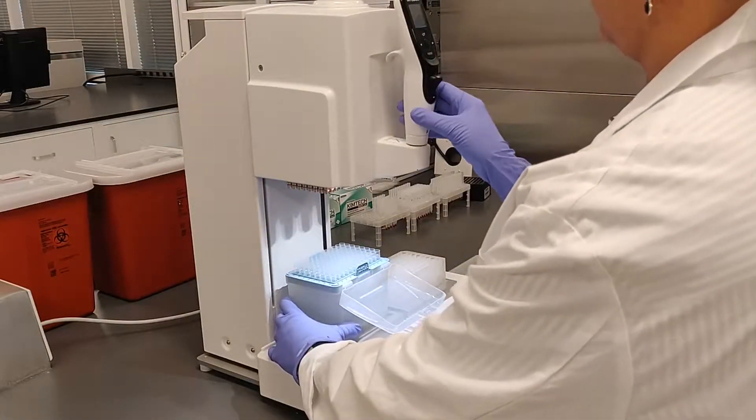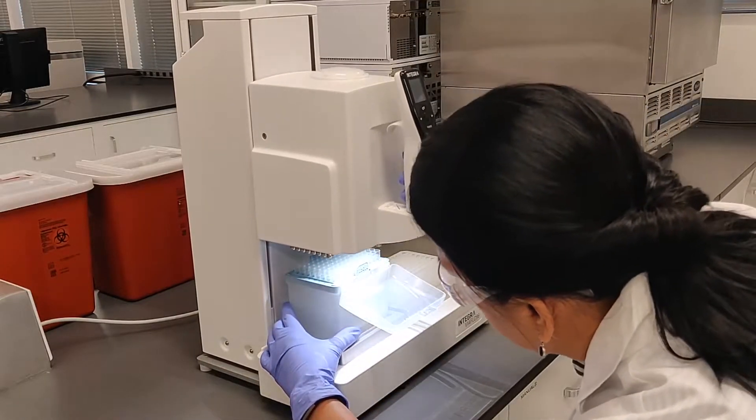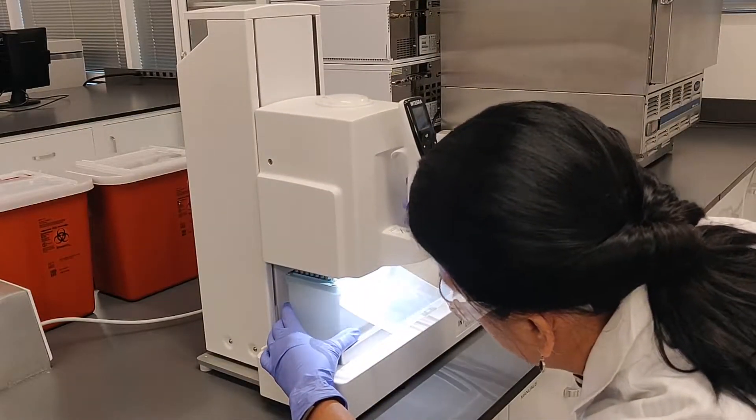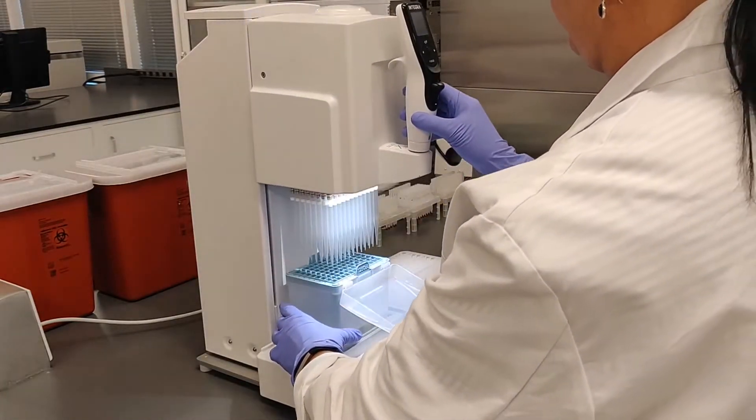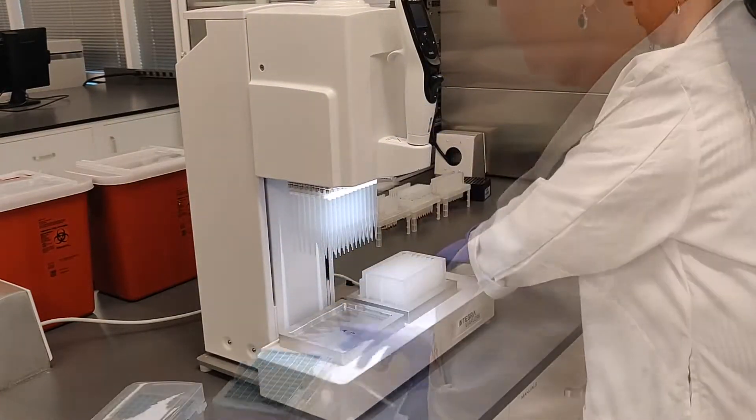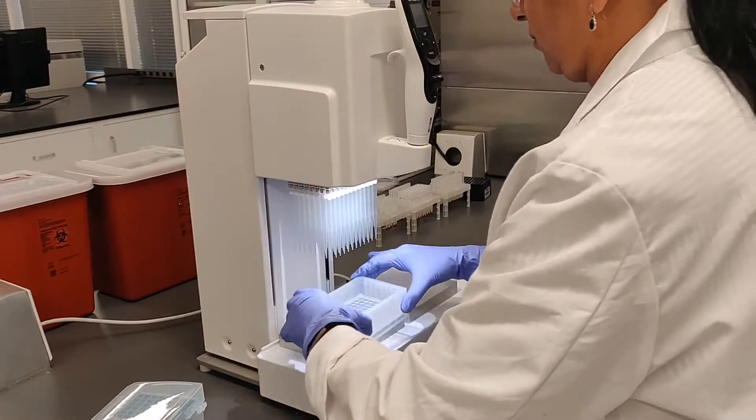During the extraction process, you can prepare a 96-well collection plate manually if you want, but it's 75% faster and a lot more convenient when you use the Integra ViaFlow 96-well pipetting robot.